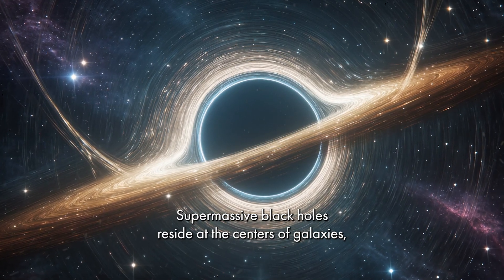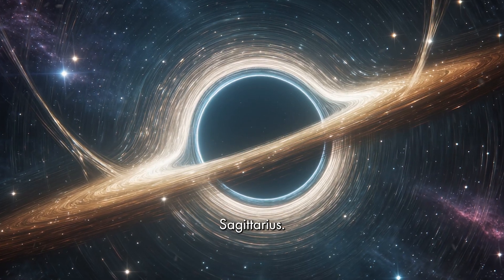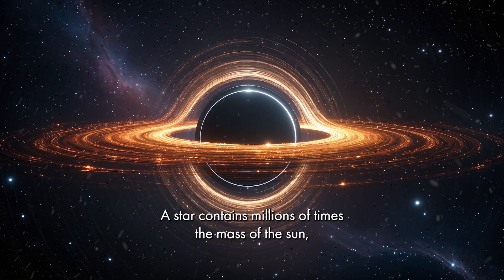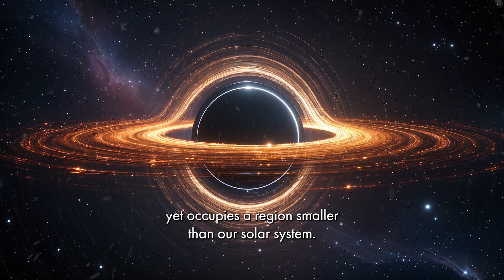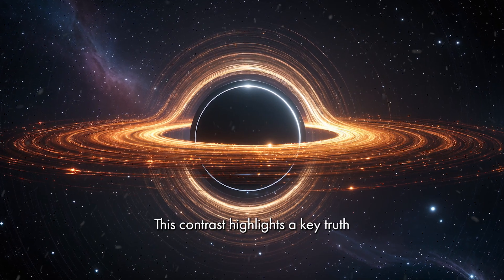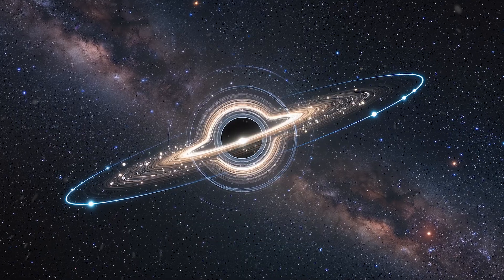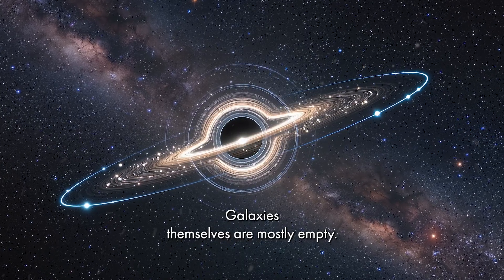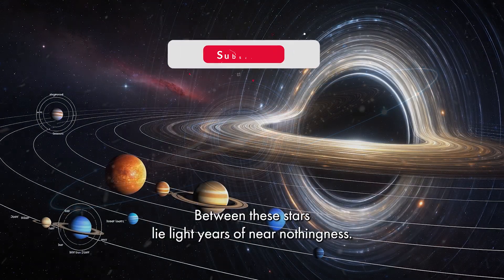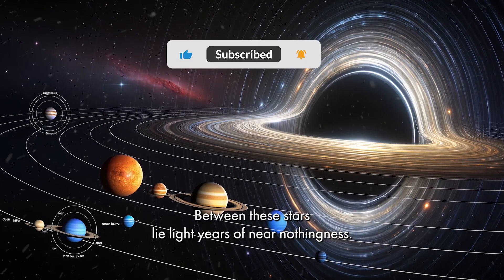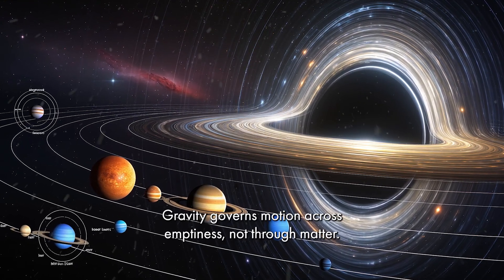Supermassive black holes reside at the centers of galaxies, including one at the heart of the Milky Way: Sagittarius A star. It contains millions of times the mass of the sun, yet occupies a region smaller than our solar system. This contrast highlights a key truth. Extreme mass can exist inside extreme emptiness. Galaxies themselves are mostly empty. Stars orbit their central black holes across enormous voids. Between these stars lie light years of near nothingness. Gravity governs motion across emptiness, not through matter.